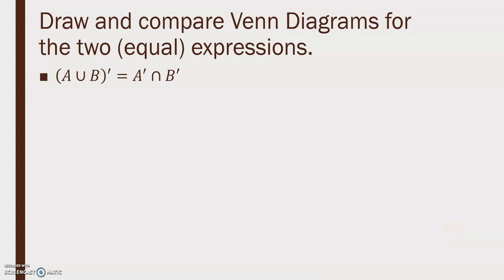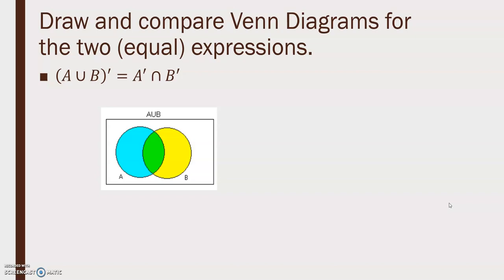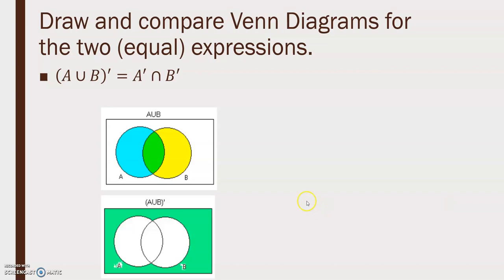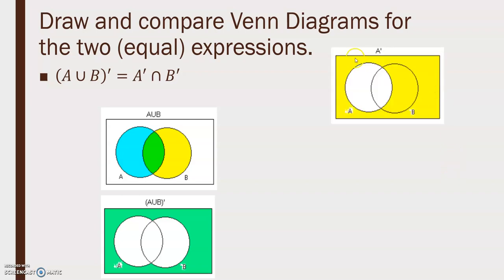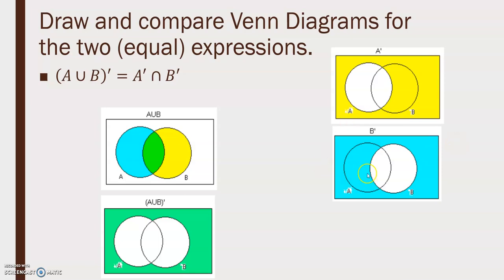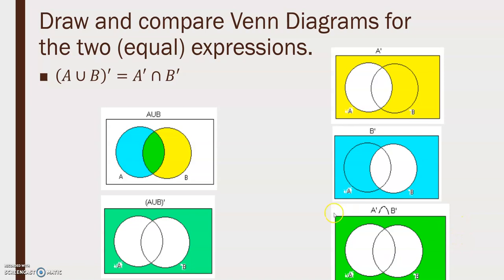For the second part of De Morgan's Law: (A union B)' and A' intersect B'. Start with A union B — it's everything in both circles. Then (A union B)' is everything in the universal set that is not in A union B. For A' intersect B': A' is everything but A, B' is everything but B, and their intersection is also everything in the universal set not in A and B.